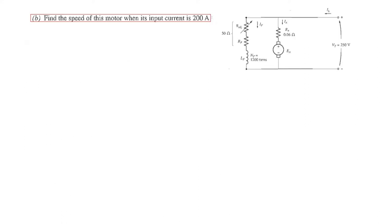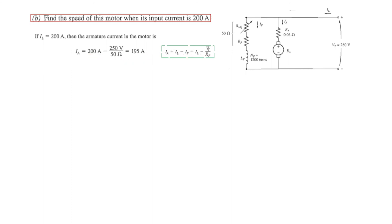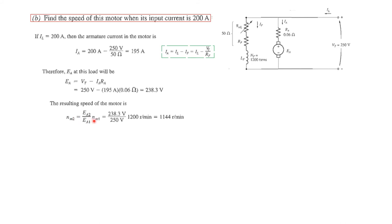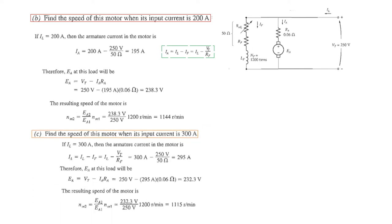For input current I_L = 200 A: I_A = 195 A, E_A = 238.3 V, and the new speed is 1144 RPM. For input current I_L = 300 A: using the same method, the new speed is 1115 RPM. So we have found all three speeds.